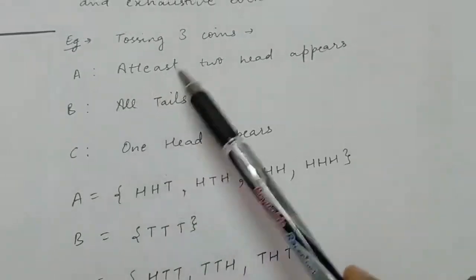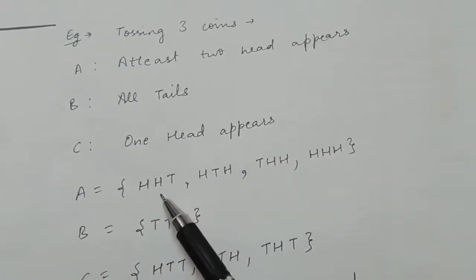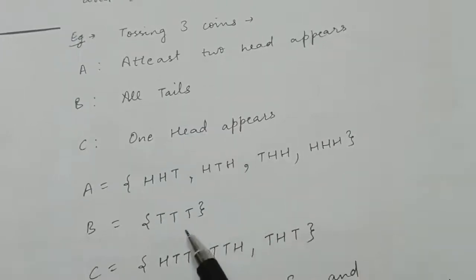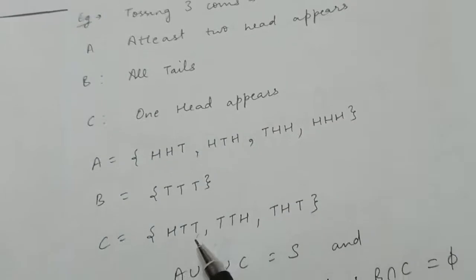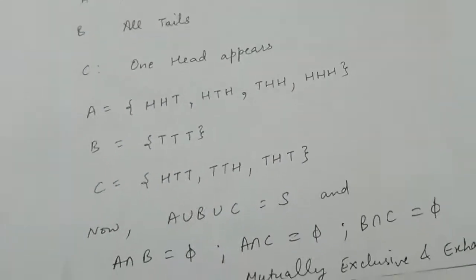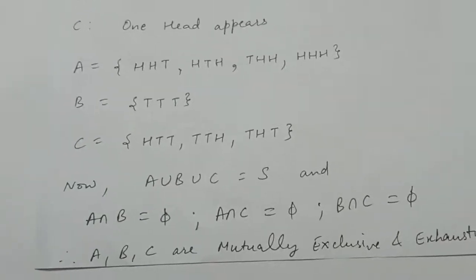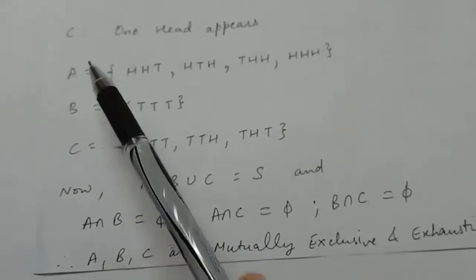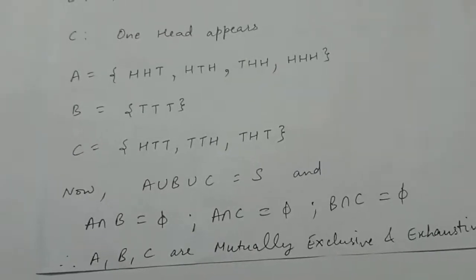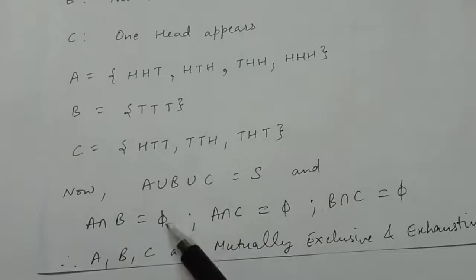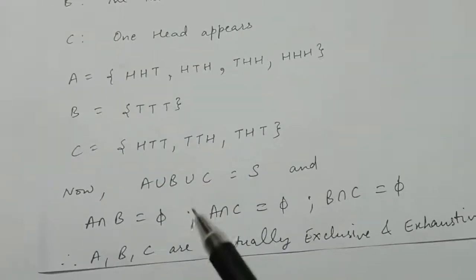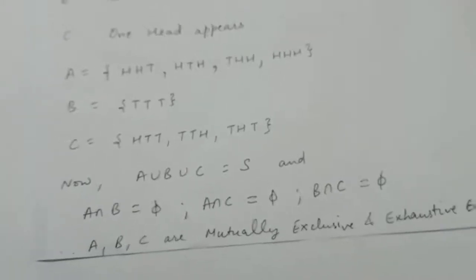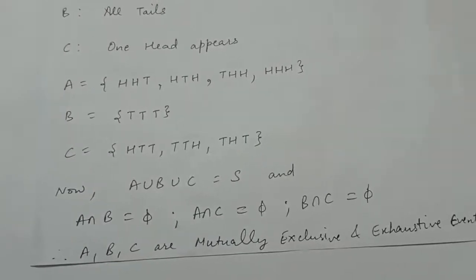For example, in tossing three coins: event A is at least two heads, event B is all tails, and event C is exactly one head. The union of A, B, and C equals the sample space of tossing three coins. Also, the intersections A∩B, A∩C, and B∩C are all phi — nothing is common between any two. Therefore A, B, and C are mutually exclusive and exhaustive events.